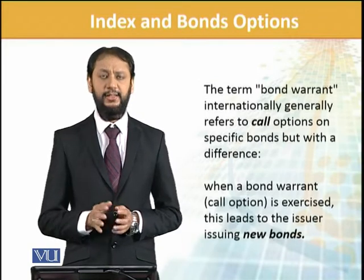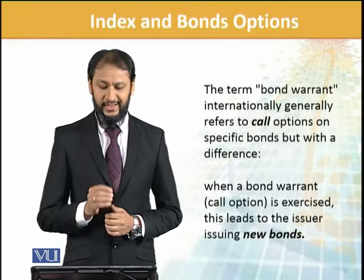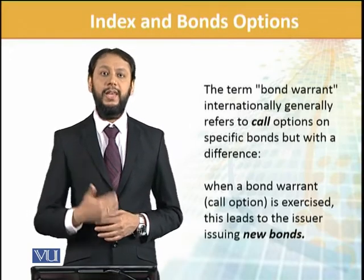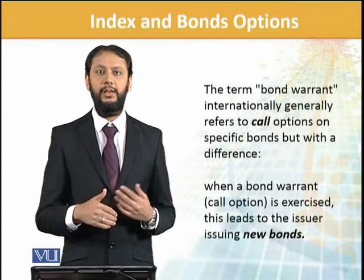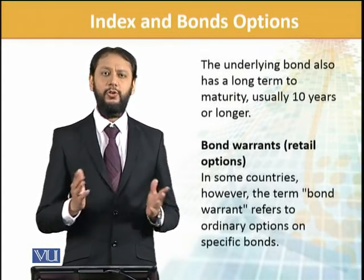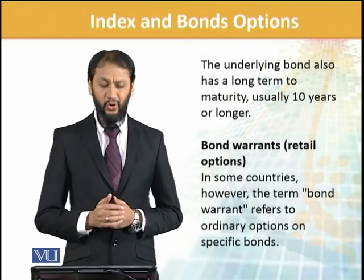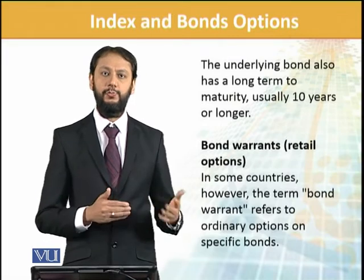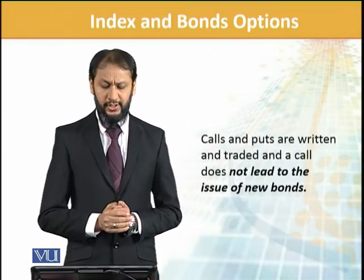The term bond warrants internationally refers to call options on a specific bond, but with a difference. When a bond warrant call option is exercised, it leads to the issuing of a new bond — that is the distinction. The company will issue a new bond for the warrant holder. The underlying bond also has long-term maturity, usually 10 years or longer. However, the term bond warrants can also refer to ordinary options on specific bonds, where trading can happen on existing bonds.